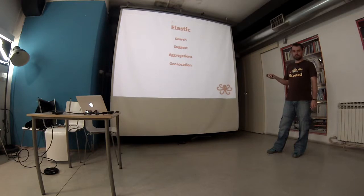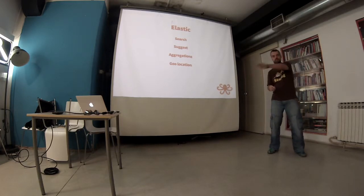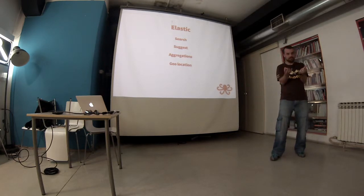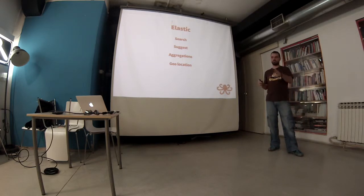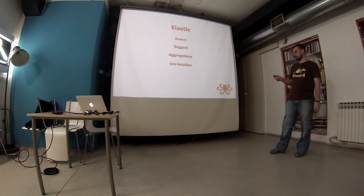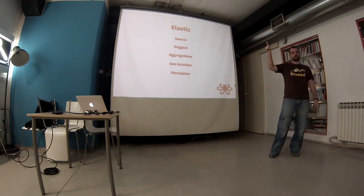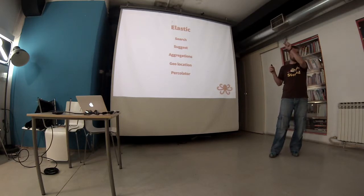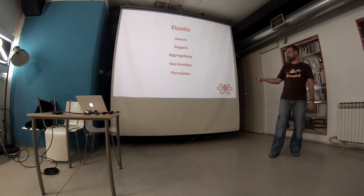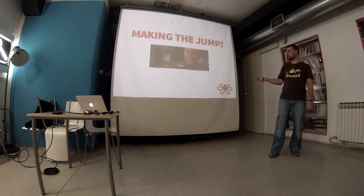Elasticsearch has geolocation support with three types of distance calculation: a flat surface model which is fastest, a sphere model which is slower, and a middle option that's quite fast and pretty accurate. It also has a percolator, which is basically stored searches — you register interest in something, and each time a new document matches that stored search, it will react and you can find it in the percolator.